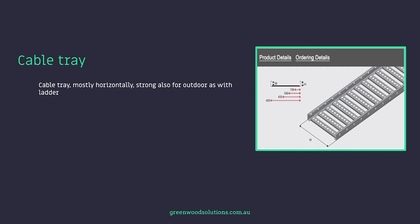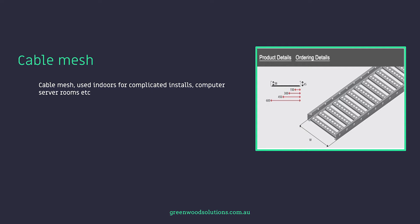Cable tray is a lot lighter than ladder in most cases and is designed for horizontal runs. A classic example is DC cable on a roof. It can be heavy duty as well, but it tends not to be as heavy as ladder. Cable mesh is designed for supporting cables that are quite light in weight, such as comms cables and internet cables, and it's primarily used indoors.